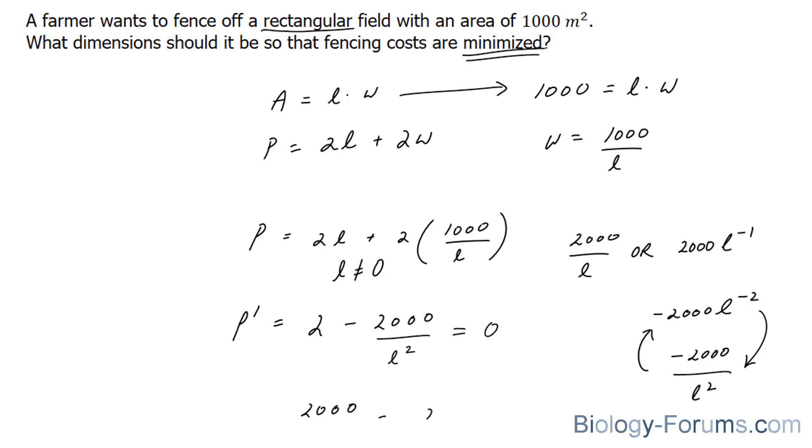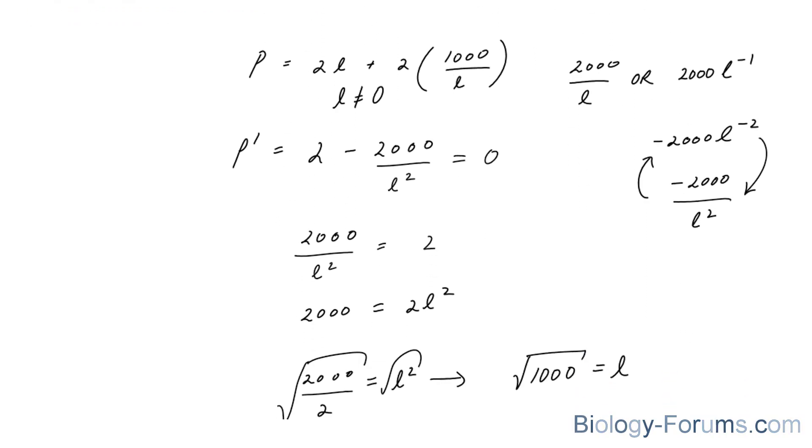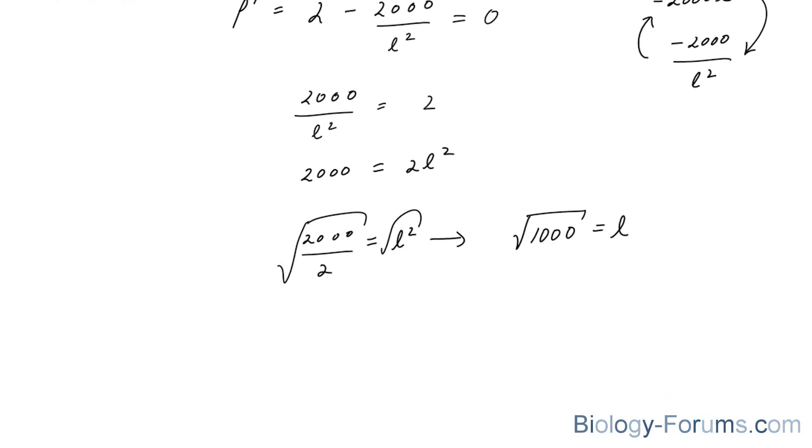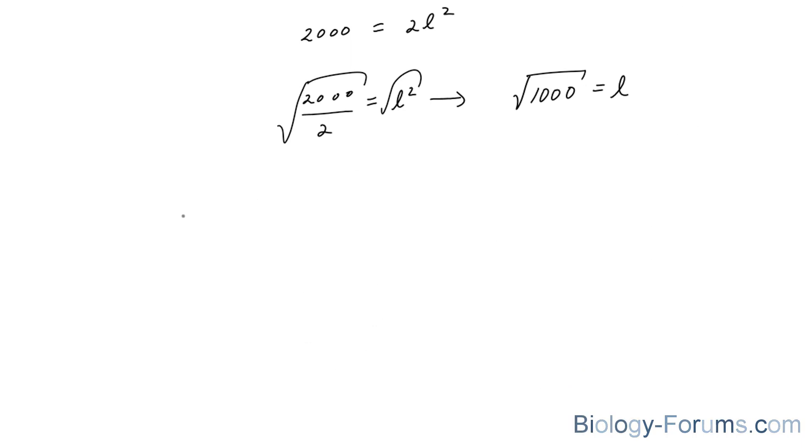We also have to consider this when creating that chart. We have to pick values that are when L is less than 0, when L is in between the square root of 1,000 and 0, and values of L that are greater than the square root of 1,000.